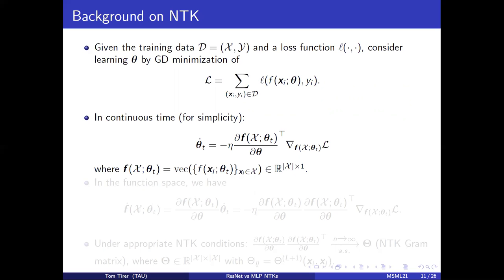To see this, let D be the training set and L the loss function, and consider learning the parameter theta by minimizing the empirical risk using gradient descent. In continuous time, this can be written like this. And in function space, this can be written like this.